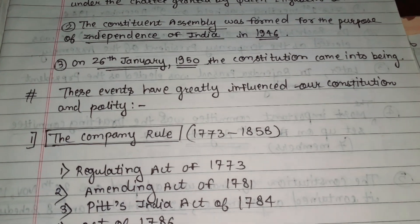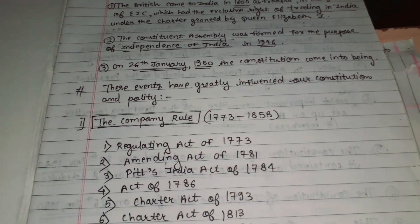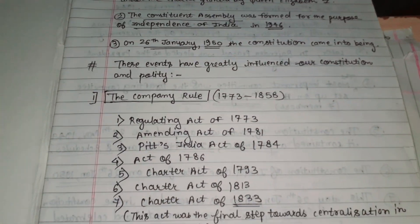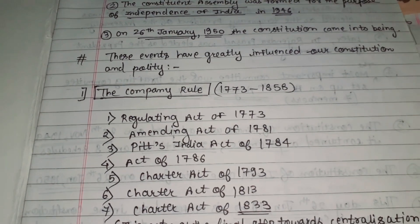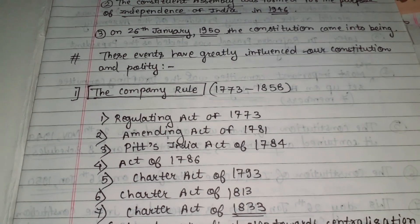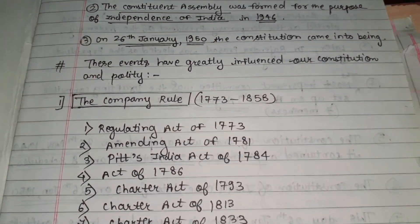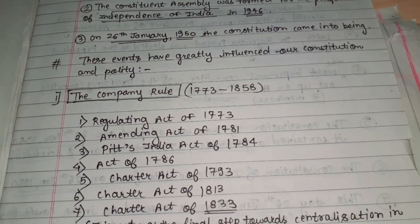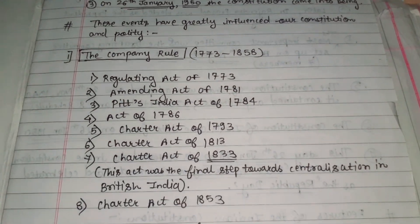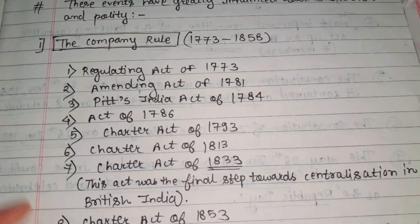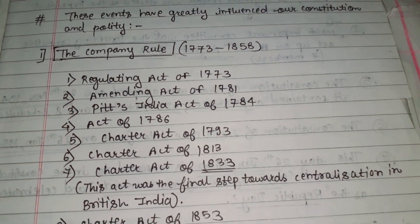These events have greatly influenced our Constitution and polity. Among them, the first is the Company Rule, which lasted from 1773 to 1858. This is the historical background of the Company Rule period, and the first act under it is the Regulating Act.